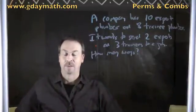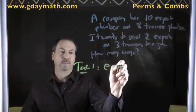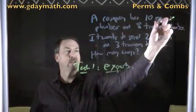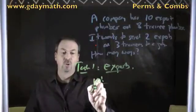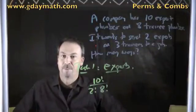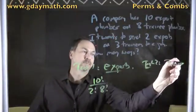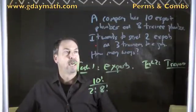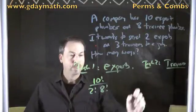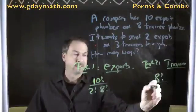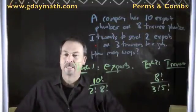So there's a multi-stage thinking going on here. Task one is deal with the experts. There are ten experts; two will be labeled 'sent' and eight will be labeled 'left behind.' Task two is deal with the trainees. There are eight trainees of which I want to send three. Three will be labeled 'sent' and five will be labeled 'stay back.' That's the ways to complete task two.